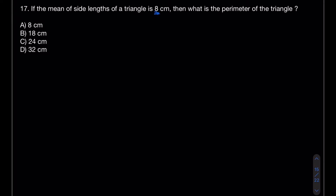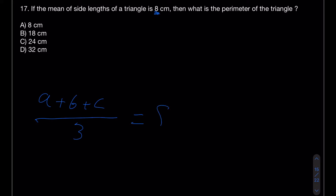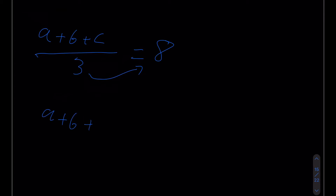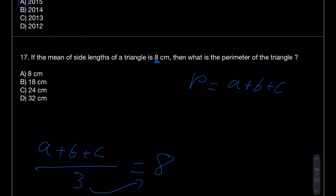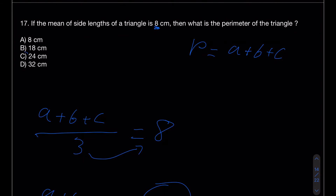A triangle has three side lengths: a, b, and c. The mean is (a + b + c) divided by 3, and this equals 8. So a + b + c = 3 × 8 = 24. The perimeter of a triangle is just the sum of its side lengths, so the perimeter is 24 — answer C.